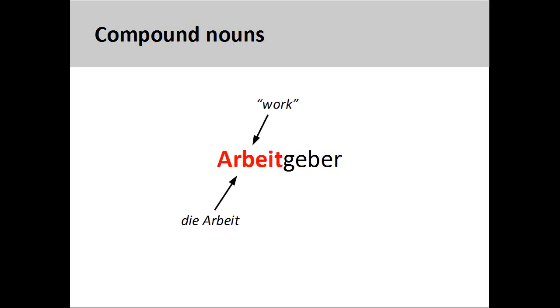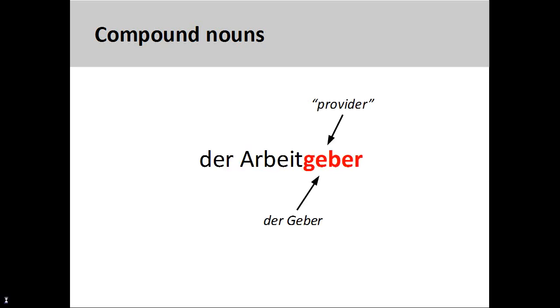The first noun in our compound noun is die Arbeit, a feminine noun meaning work. The second noun is der Geber, a masculine noun meaning giver or provider. This noun is derived from the verb geben, to give.